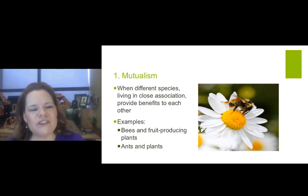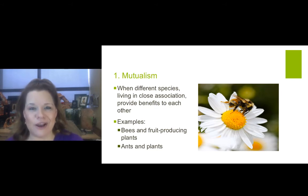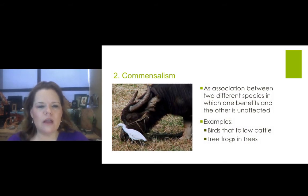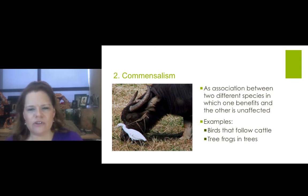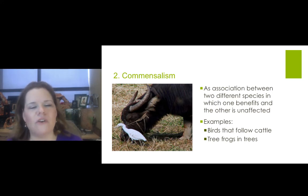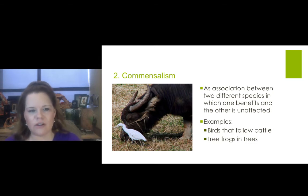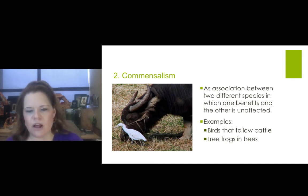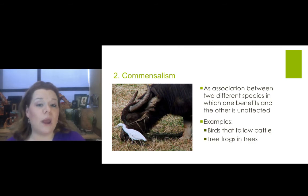Mutualism is when different species living in close association provide benefits to one another — they have a mutual understanding. Bees and fruit-producing plants, ants and plants — they do something for each other, with a mutual benefit for both. With commensalism, you have an association between two different species in which one benefits and the other is totally unaffected. The white birds you see on livestock are a case in point — they may pick off ticks off the livestock, but the livestock don't really care. Birds that follow cattle, tree frogs and trees — the frogs aren't doing anything for the trees, but the trees are giving something to the frogs. So there's a benefit one way.